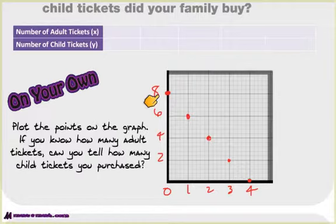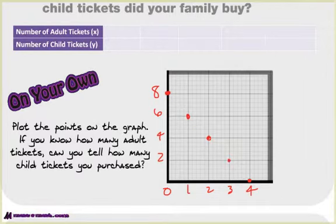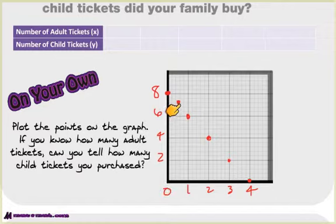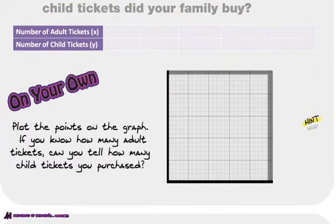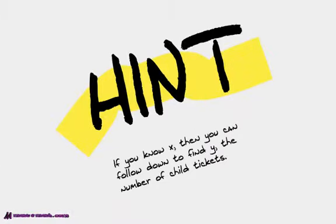Now, is this continuous or discrete? Do you remember what those terms mean? Can you have a dot right here? Can you have half a kid? I haven't tried, but I don't think you can have half a kid. Can you have 7 adults or 7 kids? Yes. Half an adult? Don't think it's possible. There's a hint — if you know the x, you can just follow down and use the pattern. Notice the pattern was pretty simple: it was a 1 to 2 pattern.